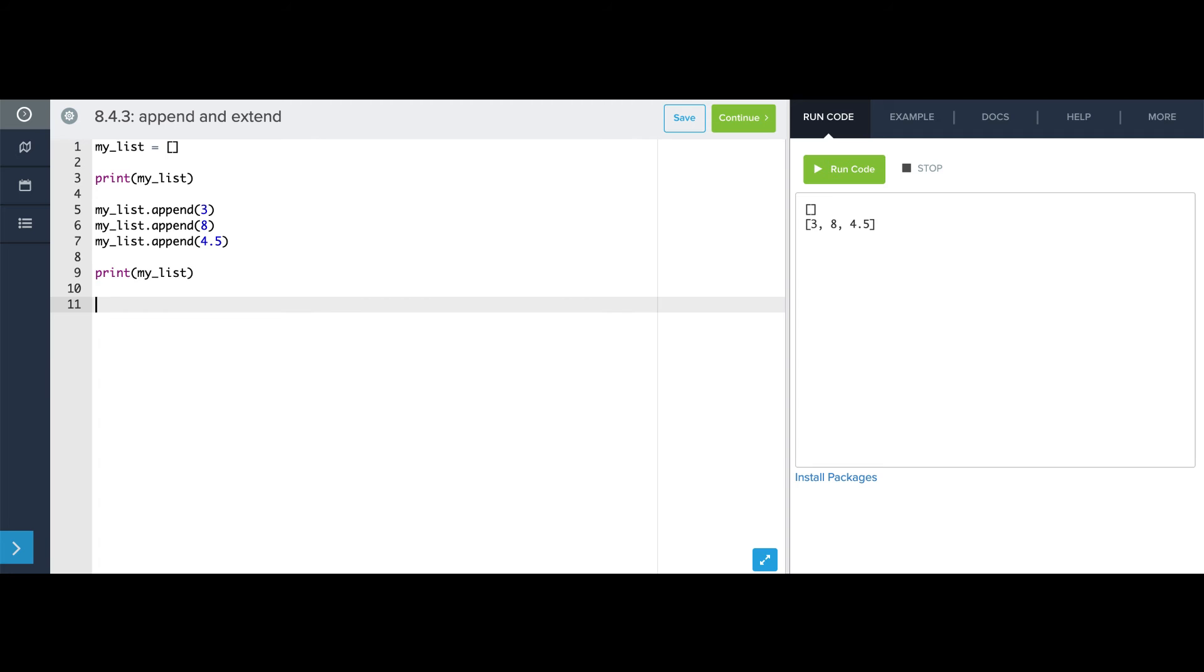Let's try to extend it. My list dot extend, and extend it with seven, eight, and nine. And this shouldn't append the list seven, eight, nine. Rather, it should take each thing in this list and append it individually. Now we print it, and sure enough, seven, eight, and nine are now at the end of the list.